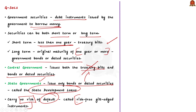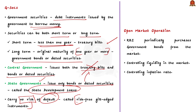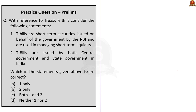Government securities also play an important role in controlling inflation. The RBI periodically purchases government securities from the market through a process called Open Market Operations. Through this process, RBI controls the liquidity in the market. By controlling liquidity, RBI can control the inflation rate. In this discussion, we saw about government securities, short-term government securities, long-term government securities, State Development Loans, and the government securities' role in controlling inflation.